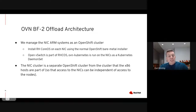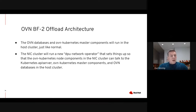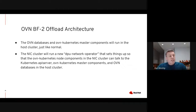One note: when we talk about managing the NICs as an OpenShift cluster, it's actually a separate OpenShift cluster from the one that the x86 hosts are part of — and again, that's the separation of security. We want it to be that if an attacker breaks into the host-level cluster, they still have no access to the NIC-level cluster. So the OVN databases and OVN Kubernetes master components will run in the host cluster, just like normal. The NIC cluster will run a new DPU network operator that sets things up so that the OVN Kubernetes node components in the NIC cluster can talk to the Kubernetes API server, OVN Kubernetes master components, and OVN databases in the host cluster.